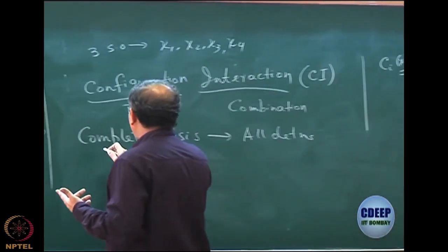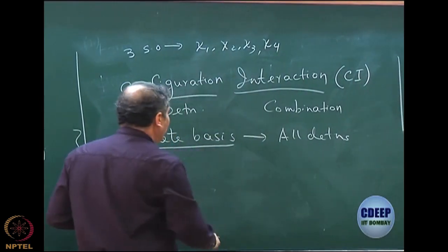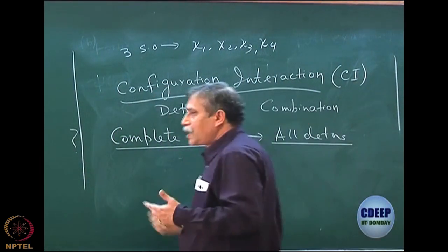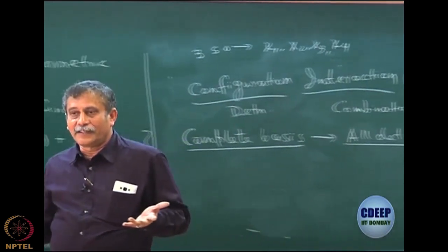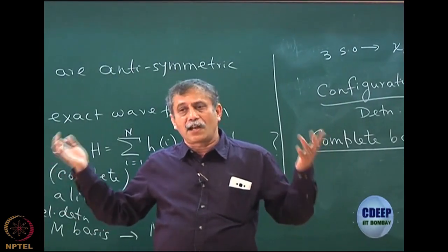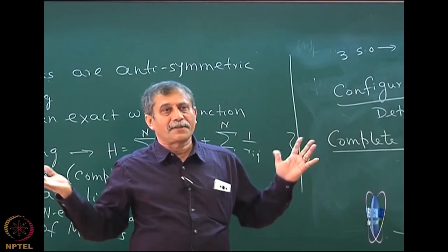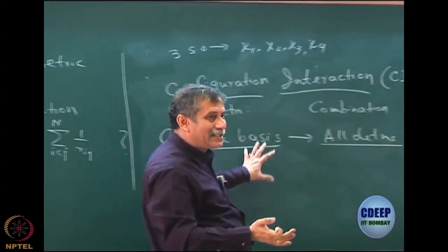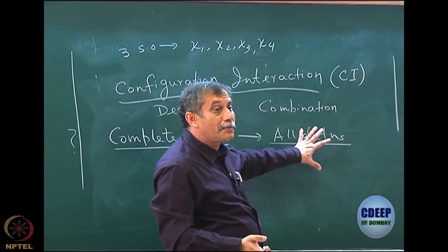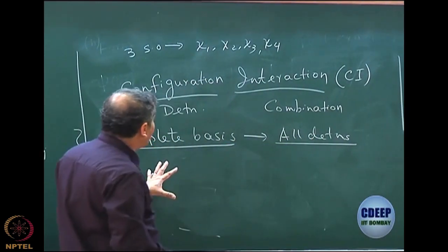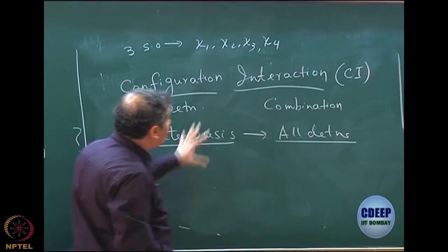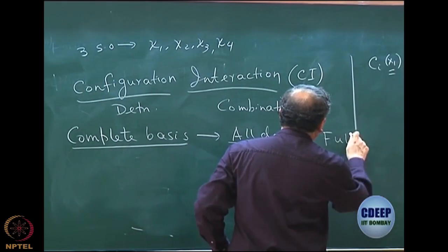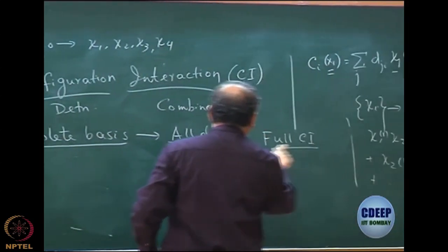There are two levels of approximation. One is the basis, and the other is the number of determinants. I need not take MCN — even if M is complete, I need not take MCN. I can make approximation in the basis, and I can make approximation in the number of determinants. But if you have a complete basis and within that you take all determinants, this method is called full CI.